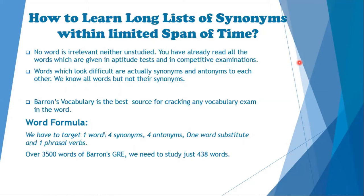A balanced vocabulary is the base source for cracking any vocabulary exam in the world. Word Formula One: target one word and then four synonyms. If we know one word, we have to find out four synonyms, four antonyms, and one word substitute if possible. If you are using GRE vocabulary, find the word, make synonyms, and use dictionaries — then write it in your own diary.